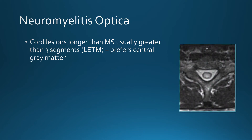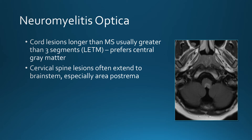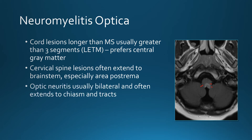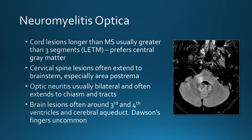On axial images, the involvement is more central in the cord with both gray and white matter involved but prominent gray matter involvement. Cervical spine lesions often involve the brainstem, especially the area postrema — the dorsal brainstem just below the fourth ventricle where the vomiting center is — which is often involved in NMO. Optic neuritis in NMO is usually bilateral and often extends to the optic chiasm and optic tracts. Brain lesions are typically seen around the third and fourth ventricles; the Dawson's fingers seen with MS are generally not seen with NMO.